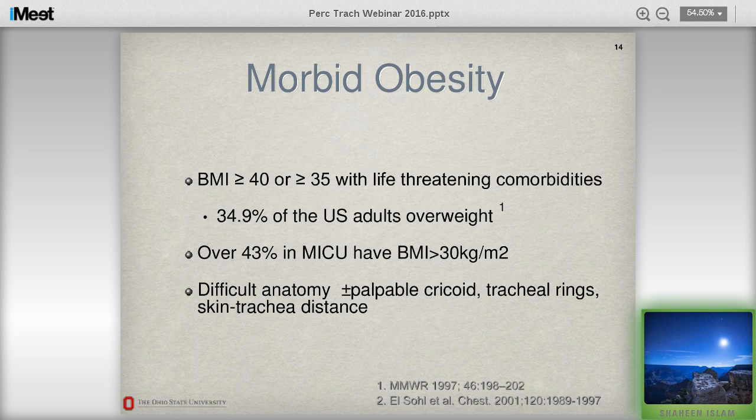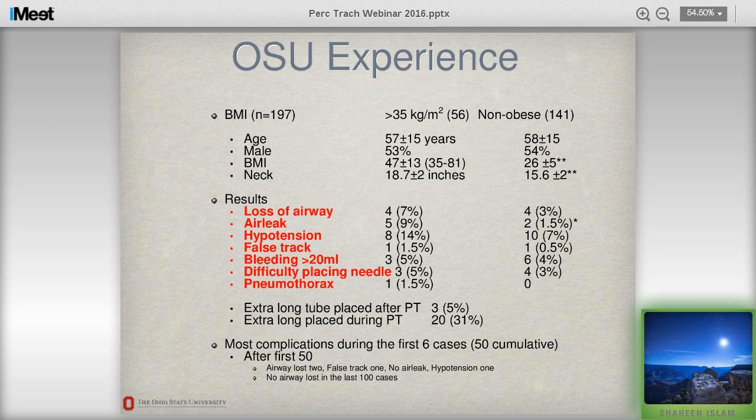The key factor is the palpable neck anatomy. If the neck anatomy can be palpated, there should not be any issues during a tracheostomy — of course, we need experience. In our medical ICU, about 43% of patients have a BMI greater than 30 kg/m², which is moderate obese or overweight. These patients have difficult anatomy; some have a palpable cricoid. In obese patients, the skin-to-tracheal-wall distance can sometimes be up to three or four centimeters.